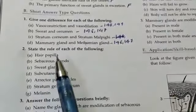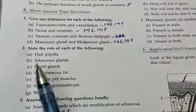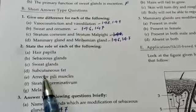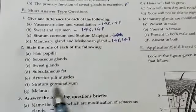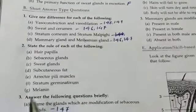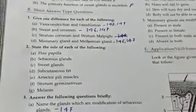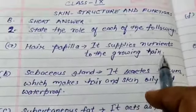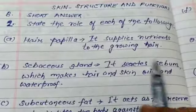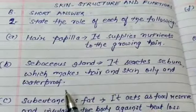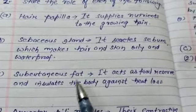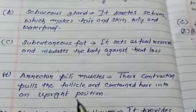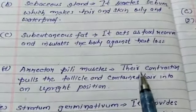Question number two: state the role of each of the following — A) hair papilla, B) sebaceous gland, C) sweat glands, D) subcutaneous fat, E) erector pili muscles, F) stratum germinativum, and G) melanin. Hair papilla supplies nutrients to the growing hair. Sebaceous gland secretes sebum which makes hair and skin oily and waterproof. Subcutaneous fat acts as a food reserve and insulates the body against heat loss.